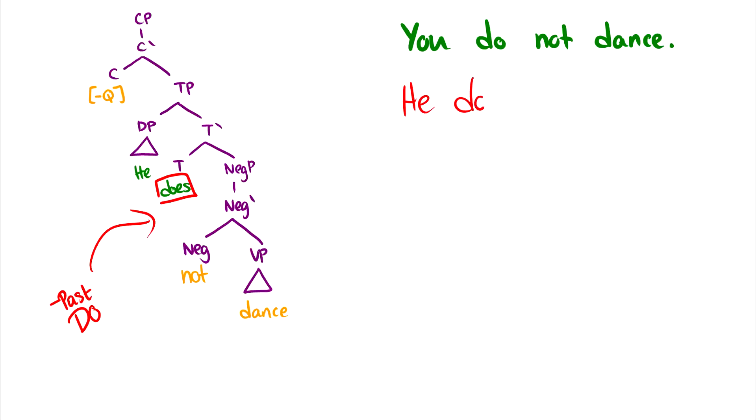So that was you do not dance. And now we have he does not dance. Now we can make this a question. And how do we make this a question? We could say, does he not dance? And what does this mean? Well, this means that now this just moves up to C, and then we get does he not dance. And we can see this is again T to C movement. So that is proof that do does appear in T and it moves up to C to make a question.